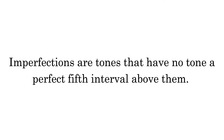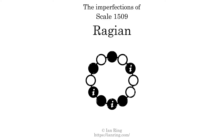Imperfections are tones that have no tone a perfect fifth interval above them. This scale has three imperfections. They are at positions here, here, and here.